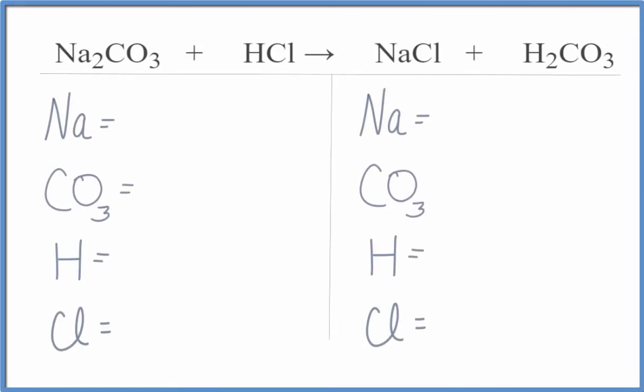Let's count the atoms on each side of the equation. I have two sodium atoms, and then the CO3, the carbonate ion. I'm going to keep it all together because I have a CO3 here and on the other side as well. So I'm just going to call the CO3 one thing. I have one of them. Hydrogens, I have one. Chlorines, I have one.